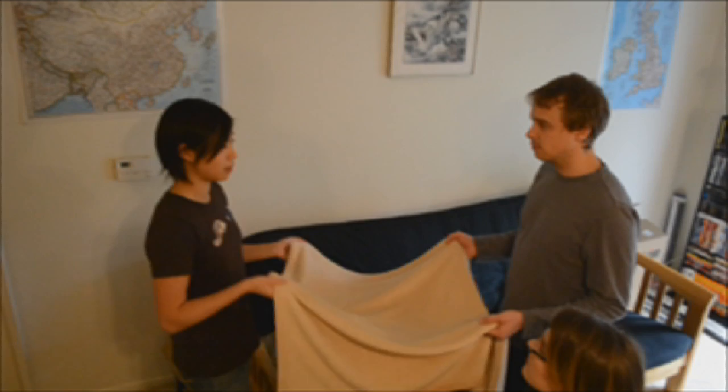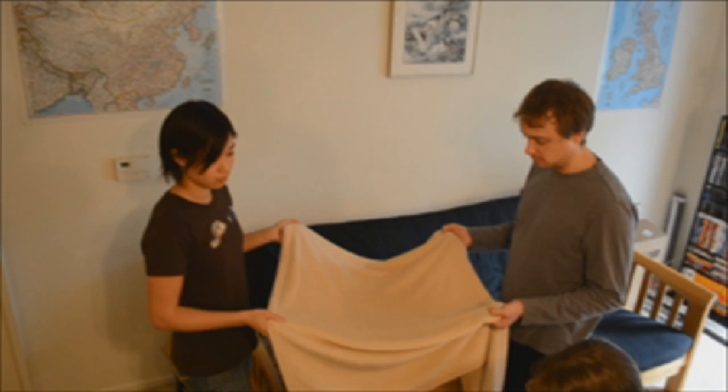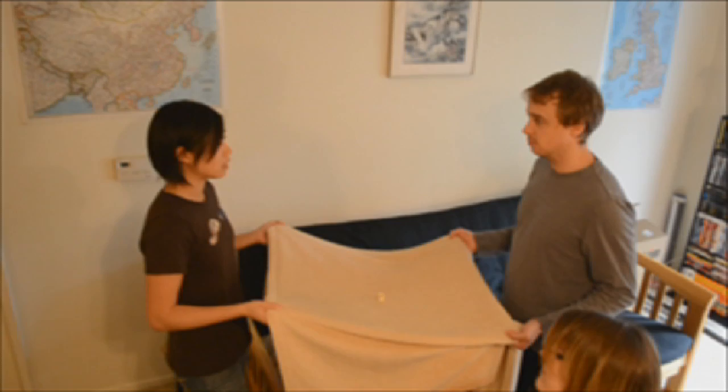And it warps and bends around the stuff, like planets, stars, you and me, that are on it. So take this popcorn, for example. It doesn't have much mass, so it doesn't warp the blanket.